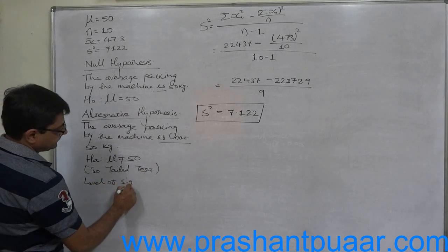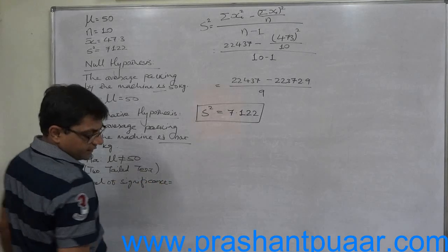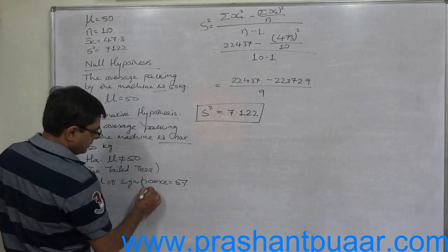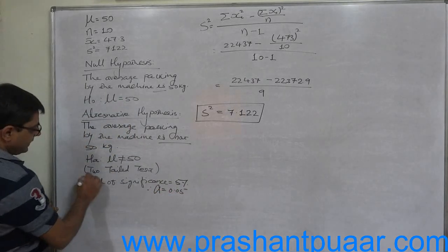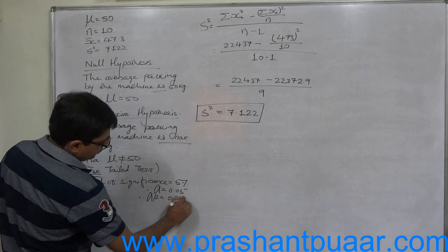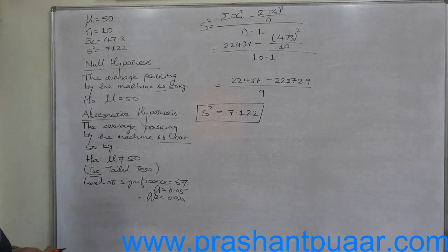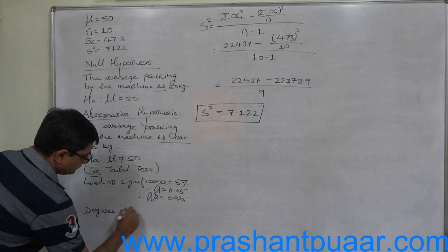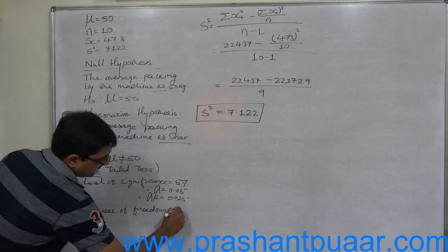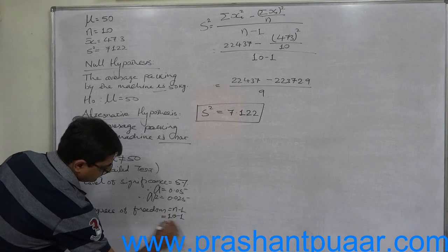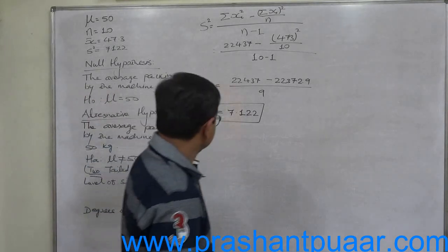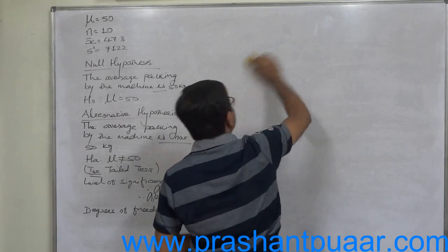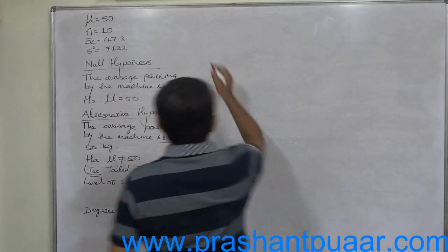Level of significance: if anything clearly is not available, then take 5 percent level of significance. Therefore, alpha = 0.05, and this is the case of two-tailed test, so we have to take alpha by 2 = 0.025. Now this is the case of T test, we have to consider the degrees of freedom, that is nothing but n minus 1. Degrees of freedom is 9.